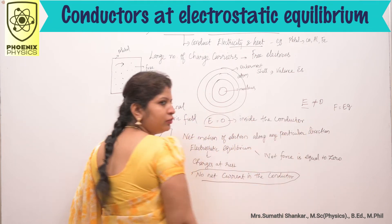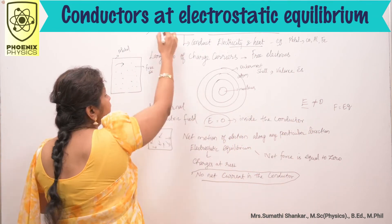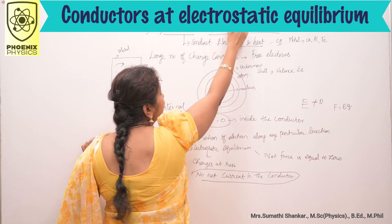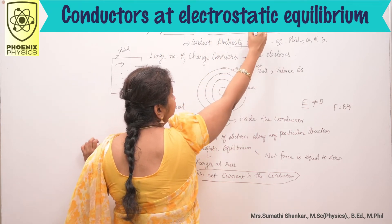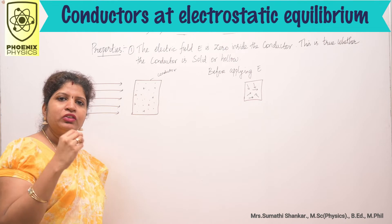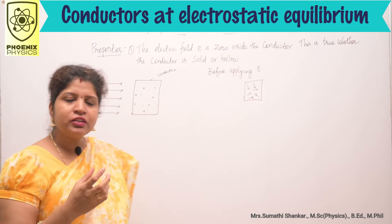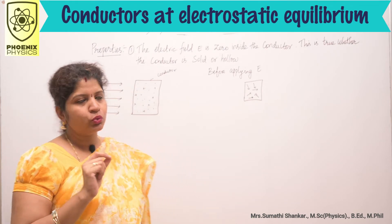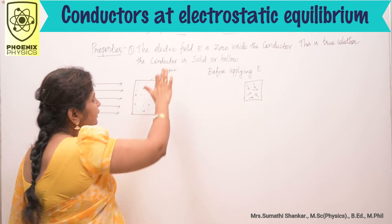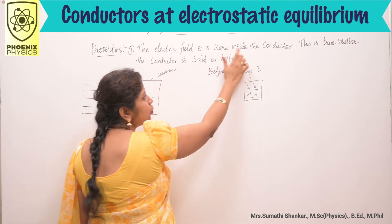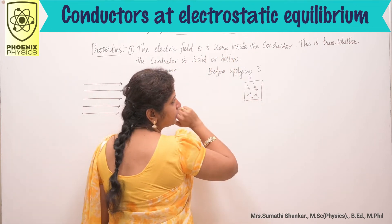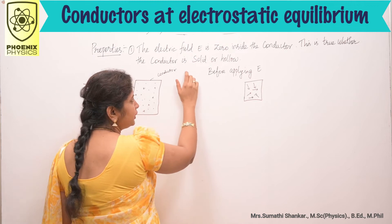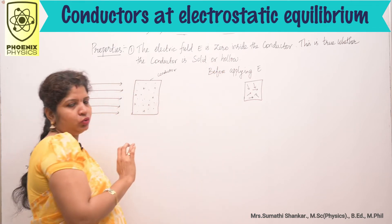So far, we discussed what conductors are and the meaning of electrostatic equilibrium. Next, we will discuss some important properties. First property: the electric field E is 0 inside the conductor. This is true whether the conductor is solid or hollow.